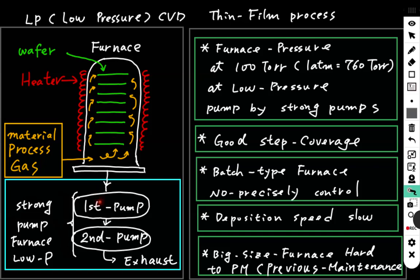This device needs a strong pump to make the furnace low pressure. This furnace pressure is about 100 Torr. One atmosphere equals 760 Torr, so 100 Torr is a low pressure.